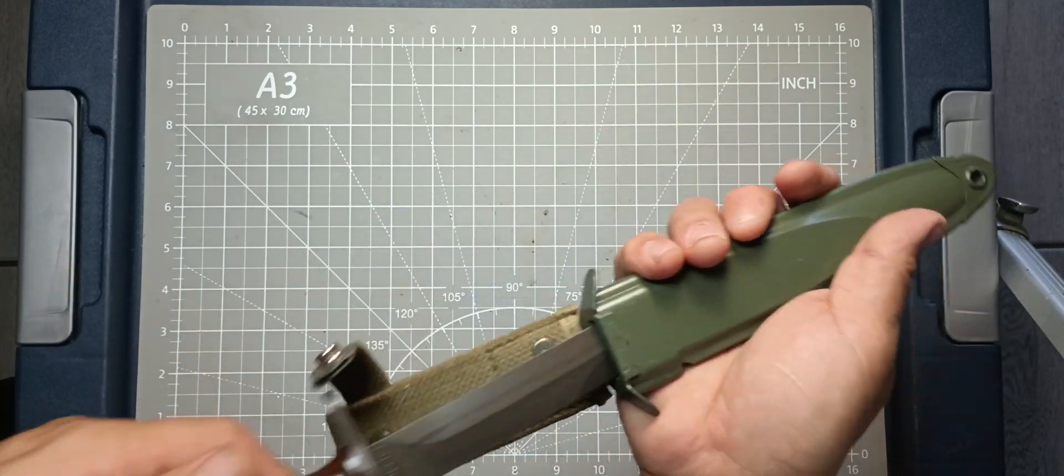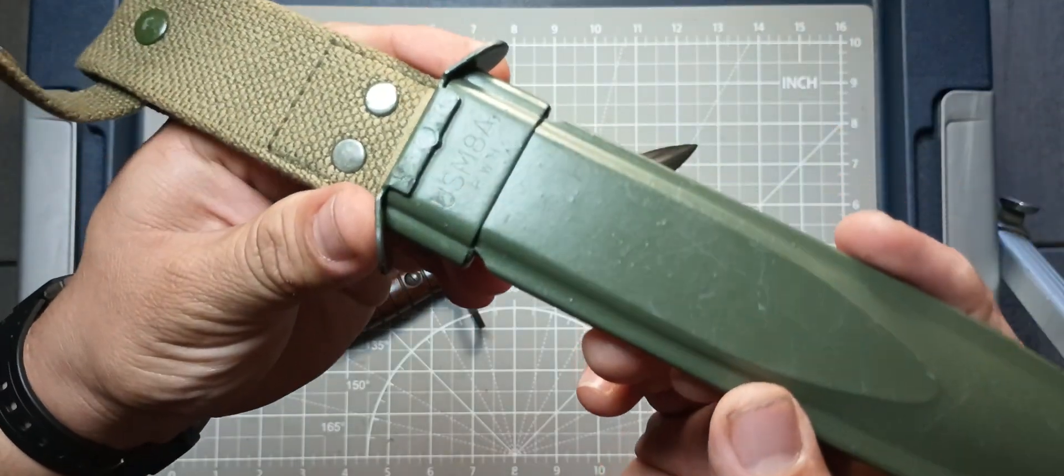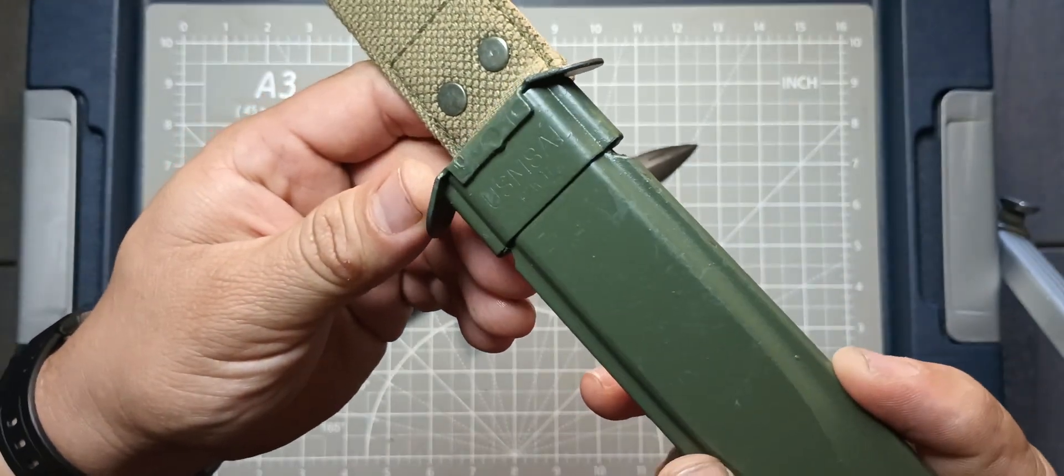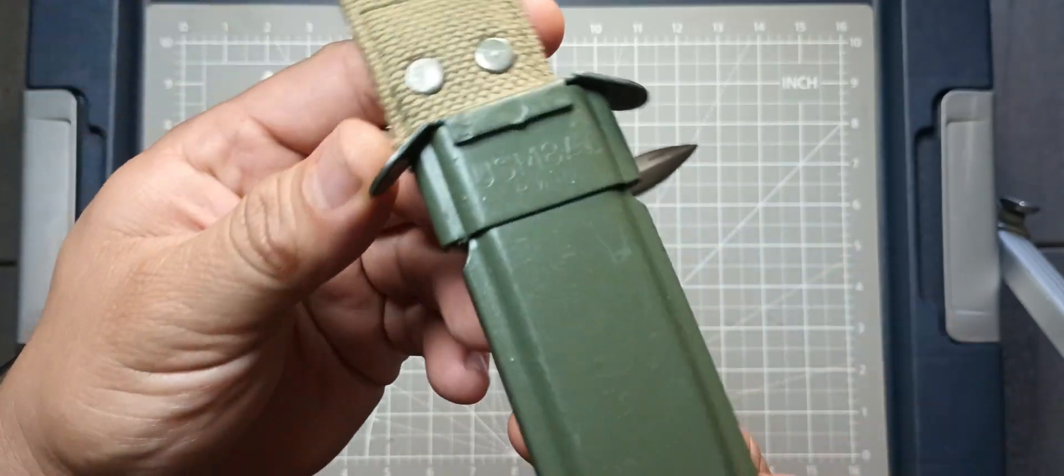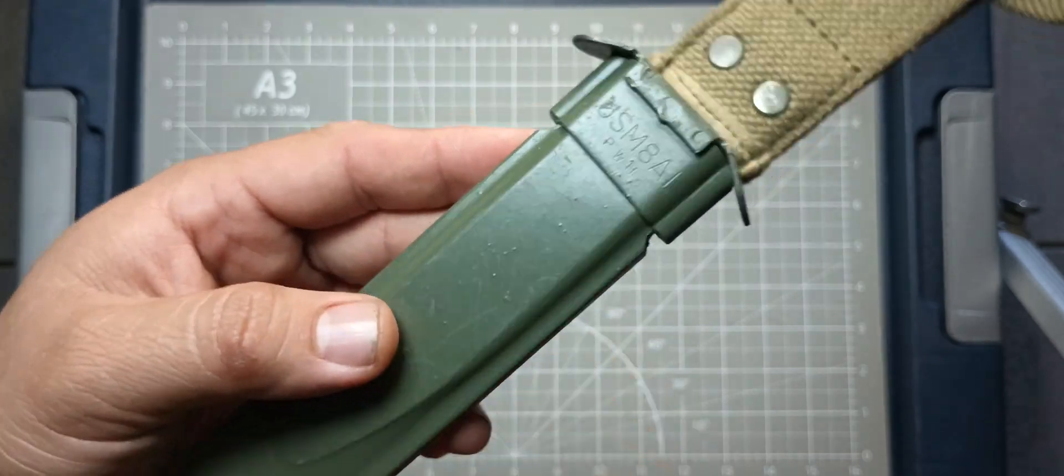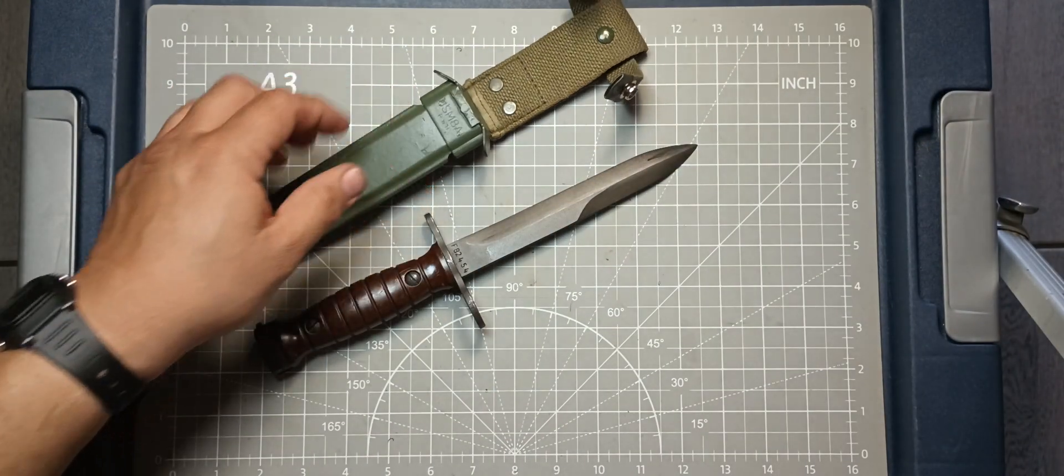You can hear it scratching the bayonet right here. I don't care if it scratches it or not. It says USM-8A1 PWH on the actual scabbard right there, sheath. We'll take a look at the bayonet now.